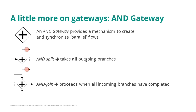In the case of the AND join, we proceed when all incoming branches have completed. So here we need to wait. If we receive one token from one incoming branch, that is not enough — we need to wait for the other token to arrive in the other branch.